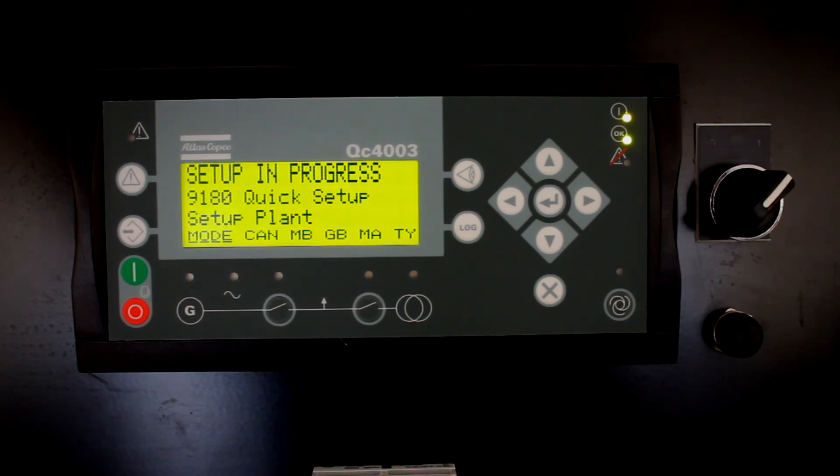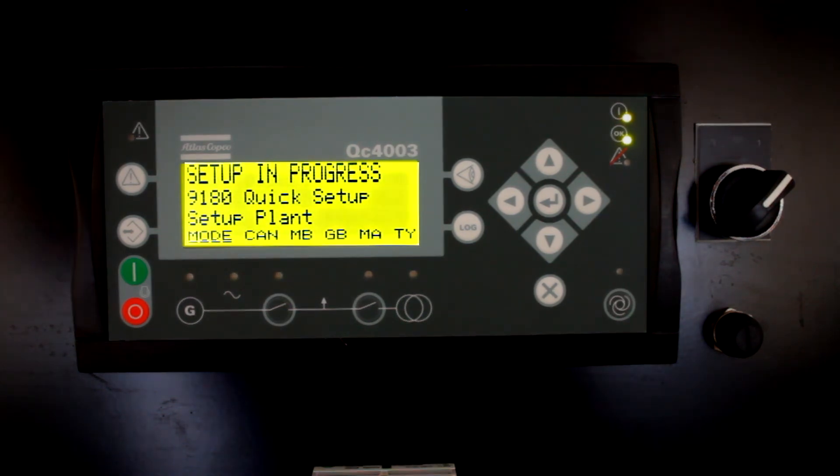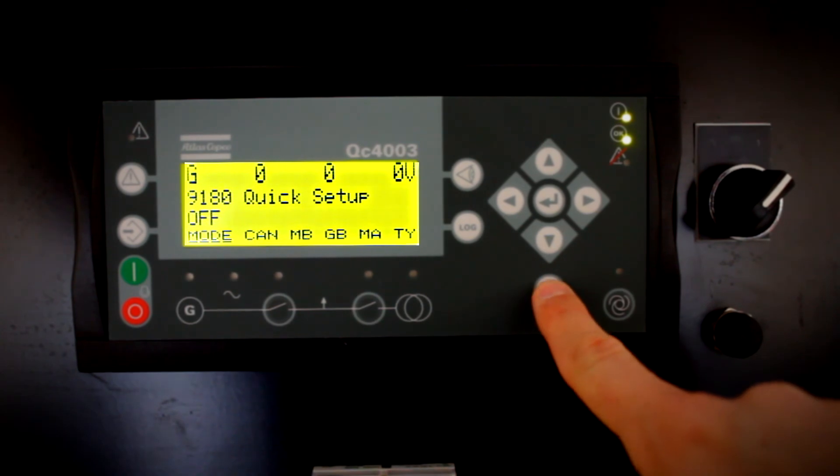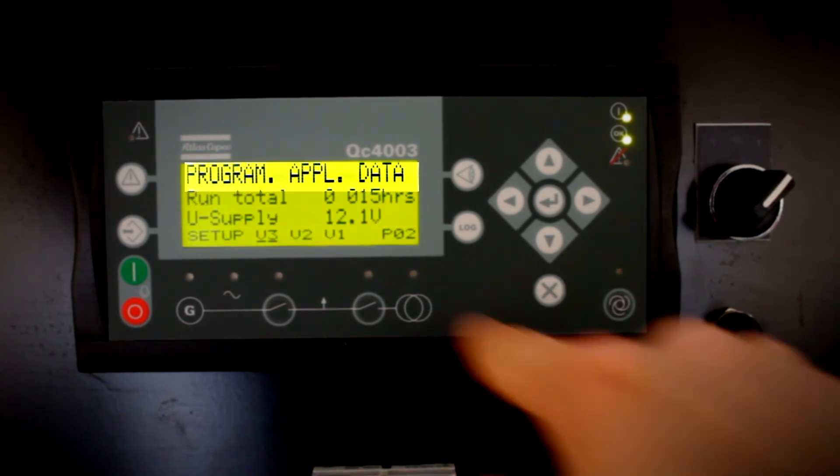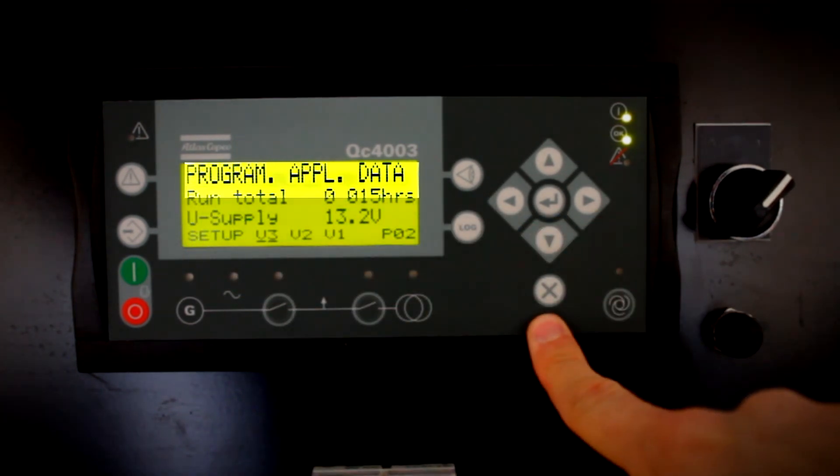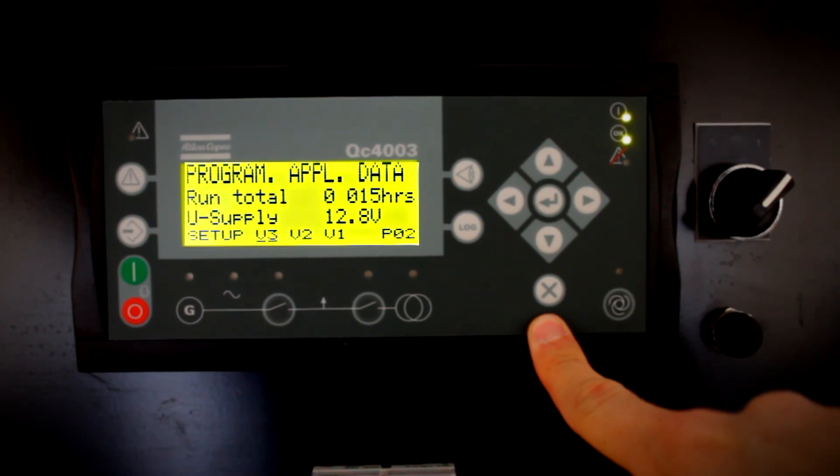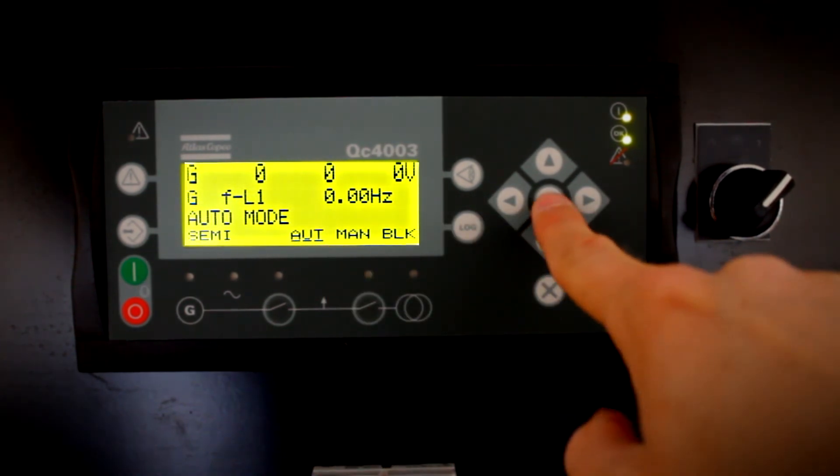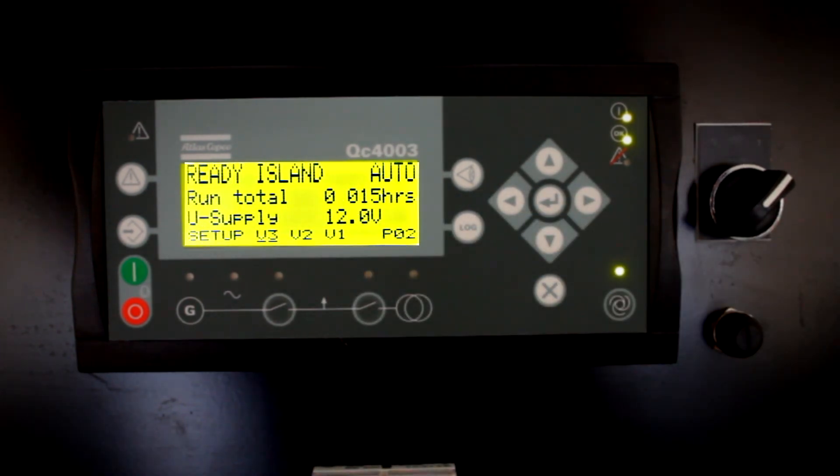When Setup is completed, please proceed to put one of the controllers in Auto. All the controllers of the power plant should now change automatically to Auto mode. Your modular power plant is now ready. Easy.